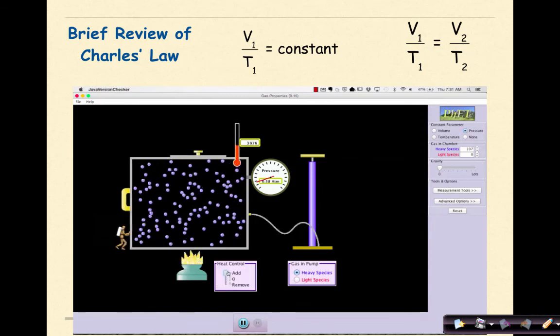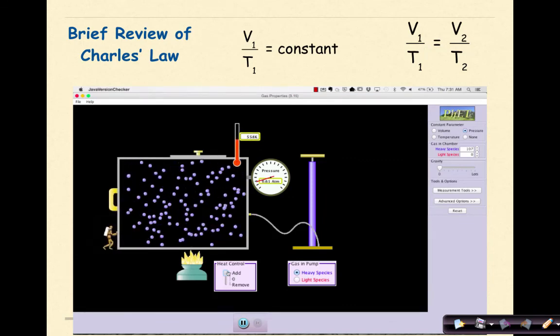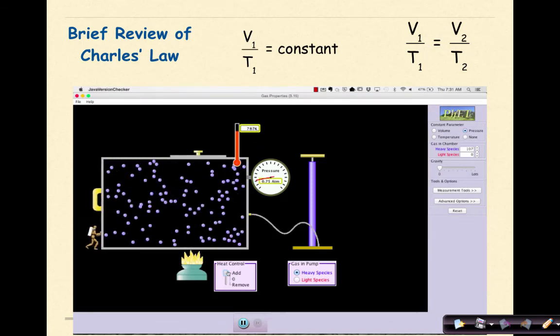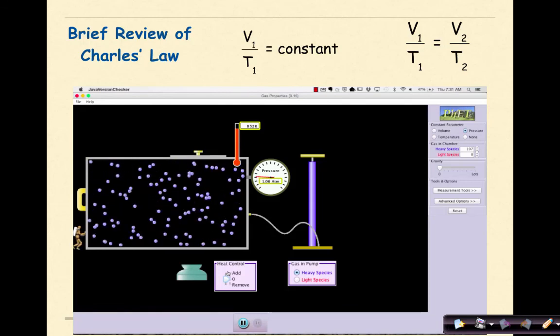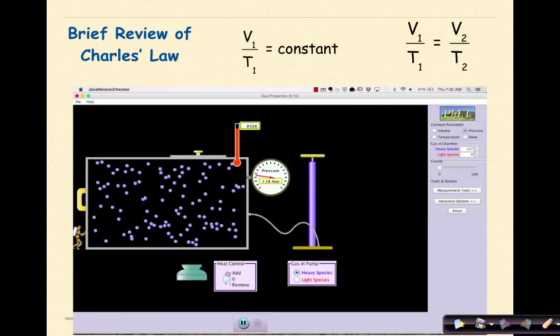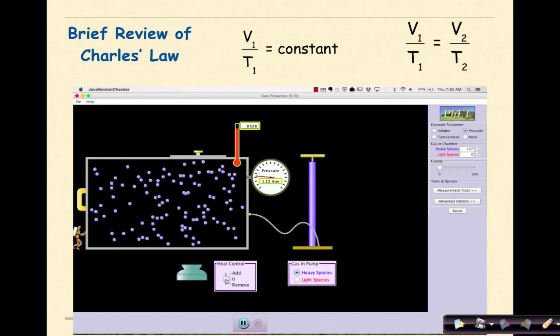Once pressure is constant, we're going to add some heat to the chamber. Now I'm not controlling the little guy. So as temperature increases, volume increases. So at 852 K, there's a lot of volume for the gas.